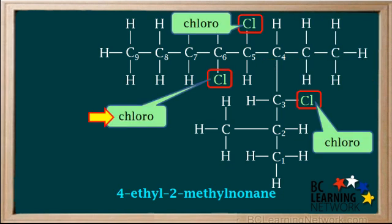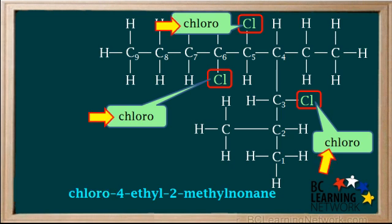The group that comes first in the alphabet is chloro, so we write chloro and a dash here in the name. But notice we have three chloro groups — we must add a prefix in front of chloro to indicate the number of chloro groups. The prefix for 3 is tri, so we add the prefix tri here. Again there is no dash; trichloro is all one word. Remember, prefixes are not counted in the alphabetical ordering of the groups.